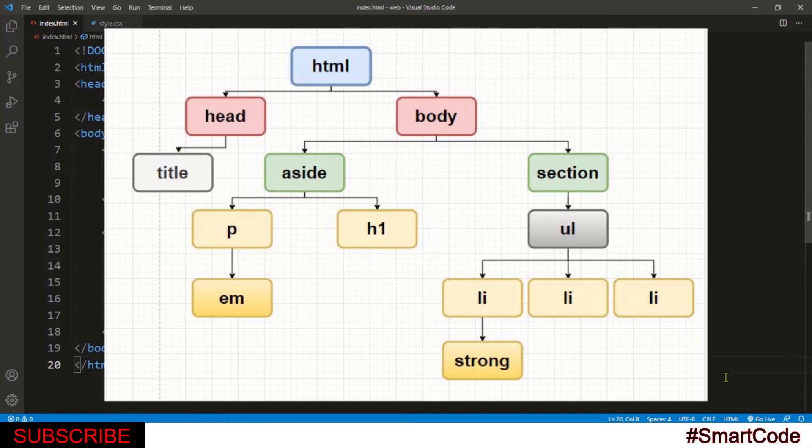So let's first try to understand the terms ancestor and descendant. As you see, the HTML tag surrounds the other tags like head and body which makes HTML the ancestor to both. In the same way, the tags inside of another tag are descendant. So the head and body tags are descendants of the HTML.